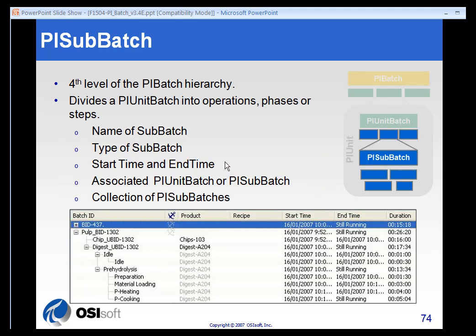Finally, we get to the SubBatch level. The SubBatch level is usually where some step, operation, or phase is taking place within a unit batch. SubBatches are optional — they are usually operations or phases — and they will have start and end times that fall within the start and end time of the unit batch. SubBatches can themselves have collections of SubBatches, making the hierarchy very rich.